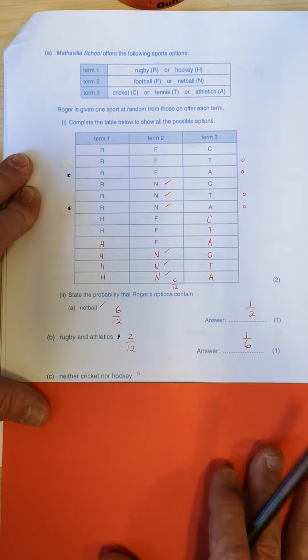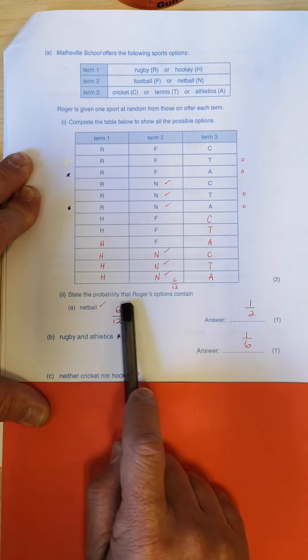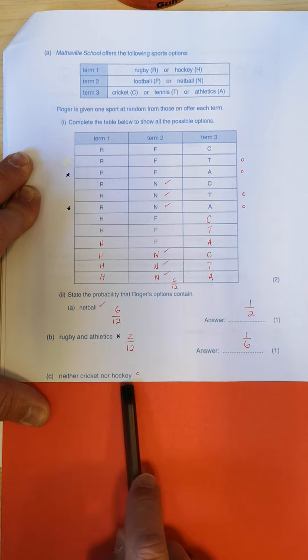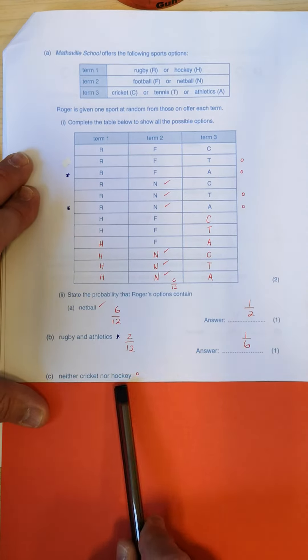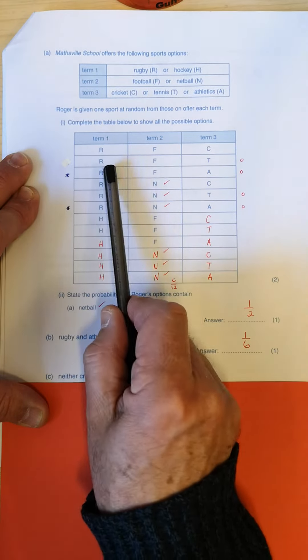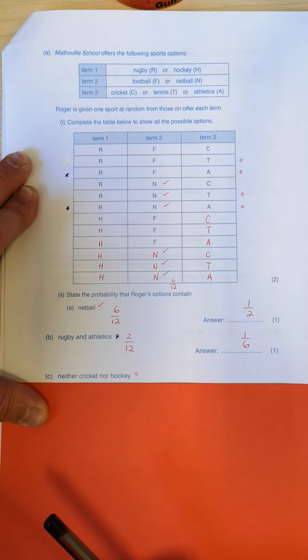And there again, I simplify it down to one-sixth. Last question. Neither cricket nor hockey. Okay, state the probability that Roger's options contain neither cricket nor hockey. Okay, so it's not allowed to have cricket, not allowed to have hockey. And look what I've done, a little circle in red, and I've found all of the places where there was no cricket or hockey.